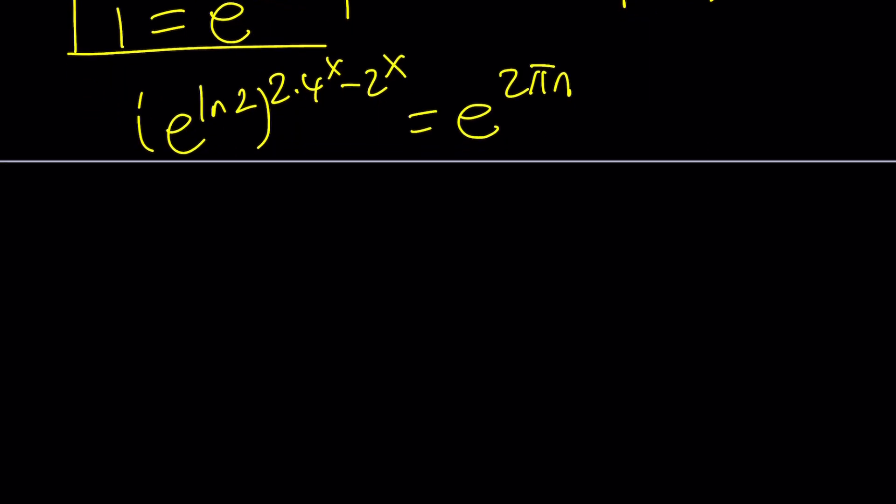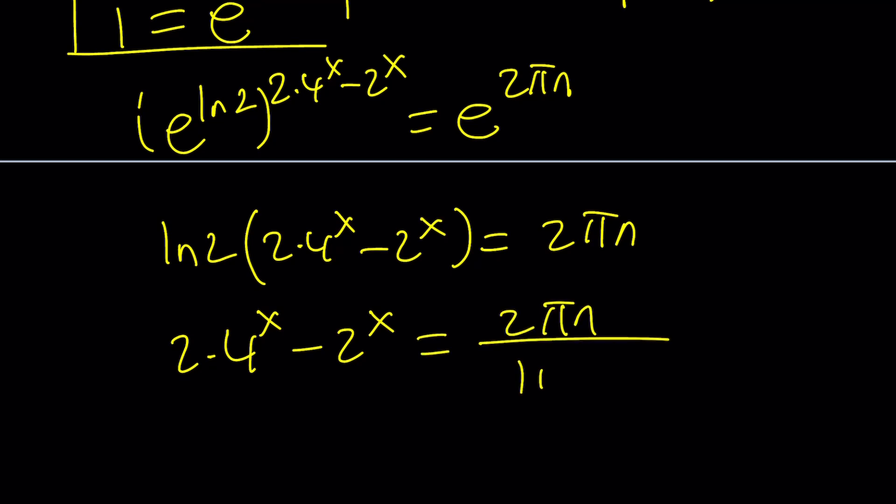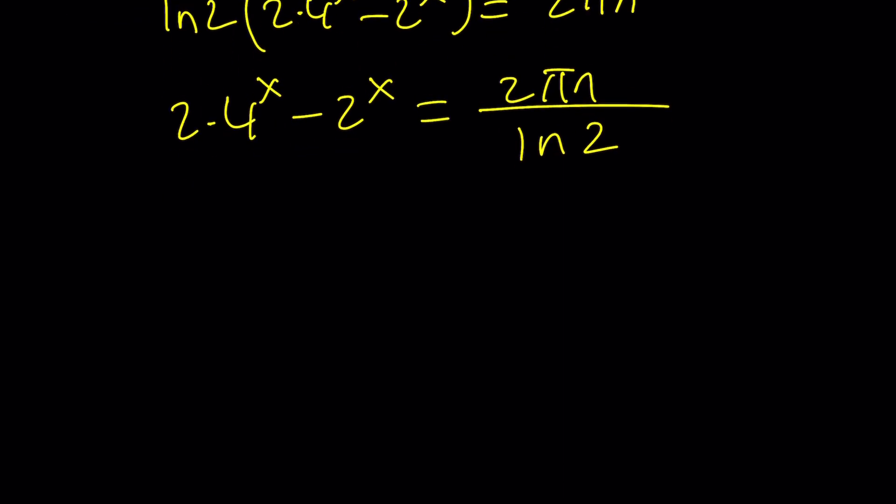Our goal is to solve for x. So let's divide both sides by ln 2. Now, at this point, you have to think about how to solve for x. We need to use substitution. Let's call this t, and this becomes t squared. So you get 2t squared minus t equals a constant.